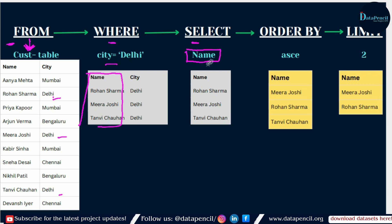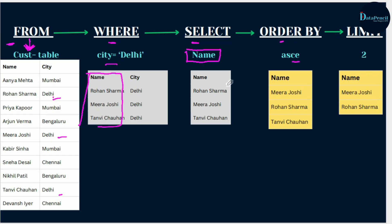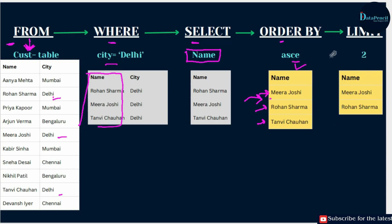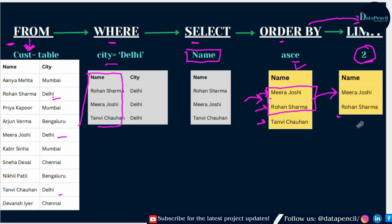If we have also written ORDER BY and LIMIT, SQL then jumps to ORDER BY and checks what we want — suppose ascending order. SQL converts the table in ascending manner; for alphabets, sorting is like a dictionary, so M then R then T. When LIMIT is also applied, SQL jumps to LIMIT, sees the user wants only two rows, extracts the top two rows, and gives you the final result.